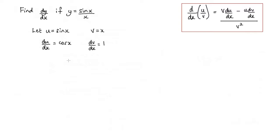So dy/dx, we can now apply this rule. We need to have v times du/dx, so v is x and we're multiplying that by cos x.